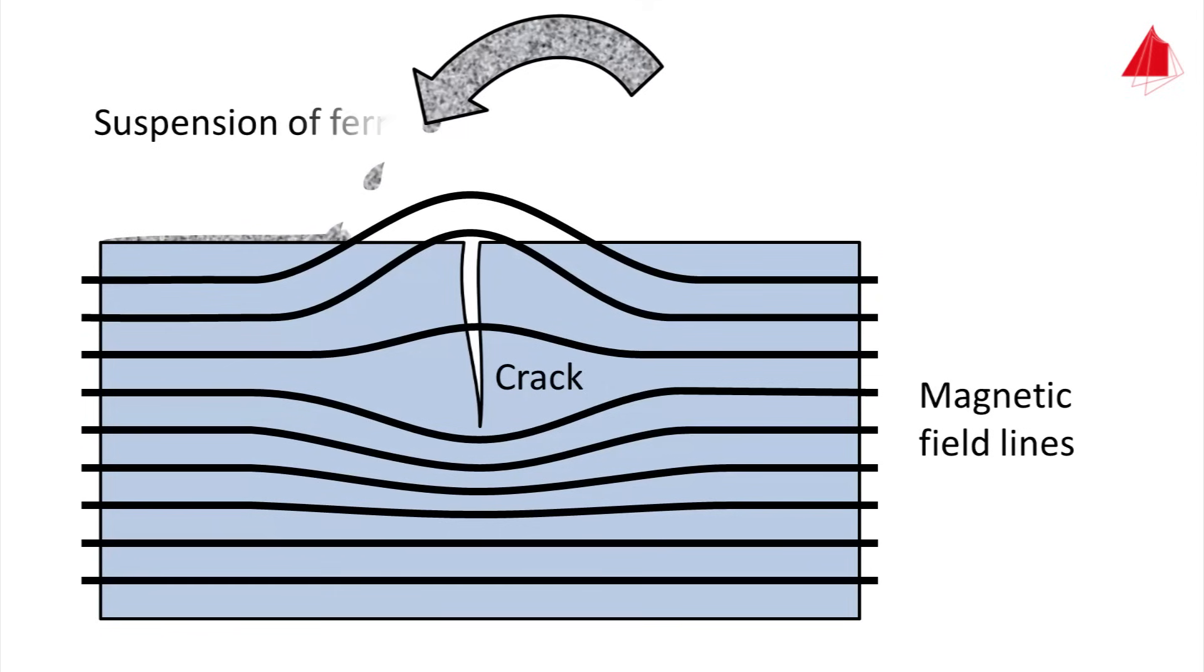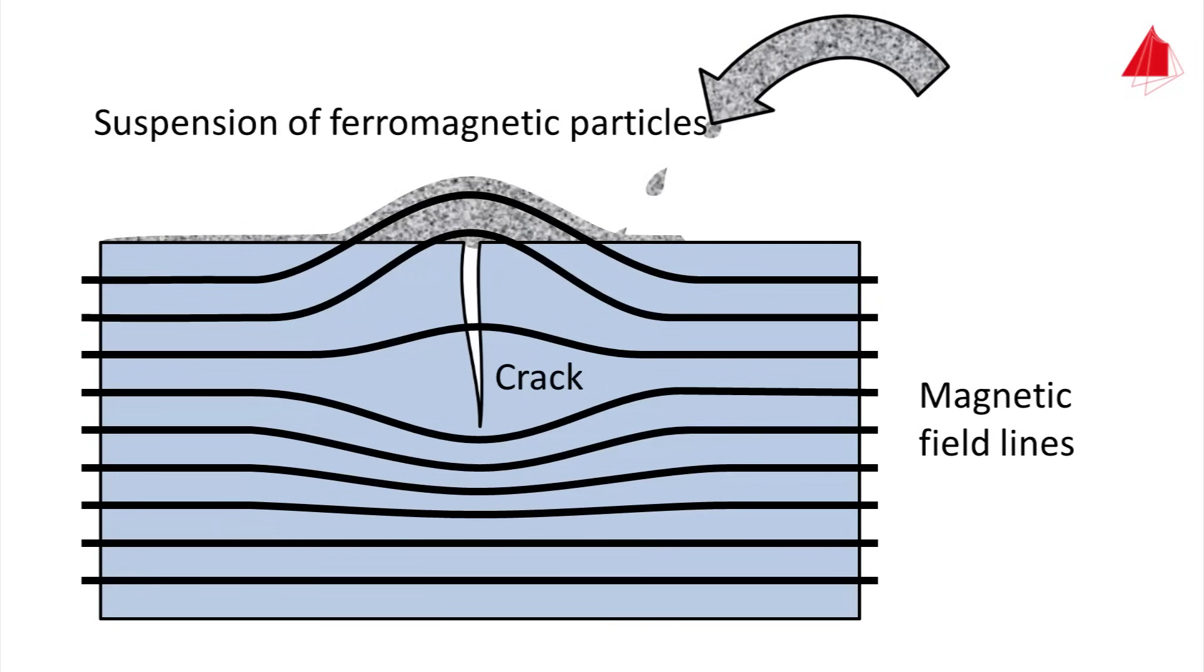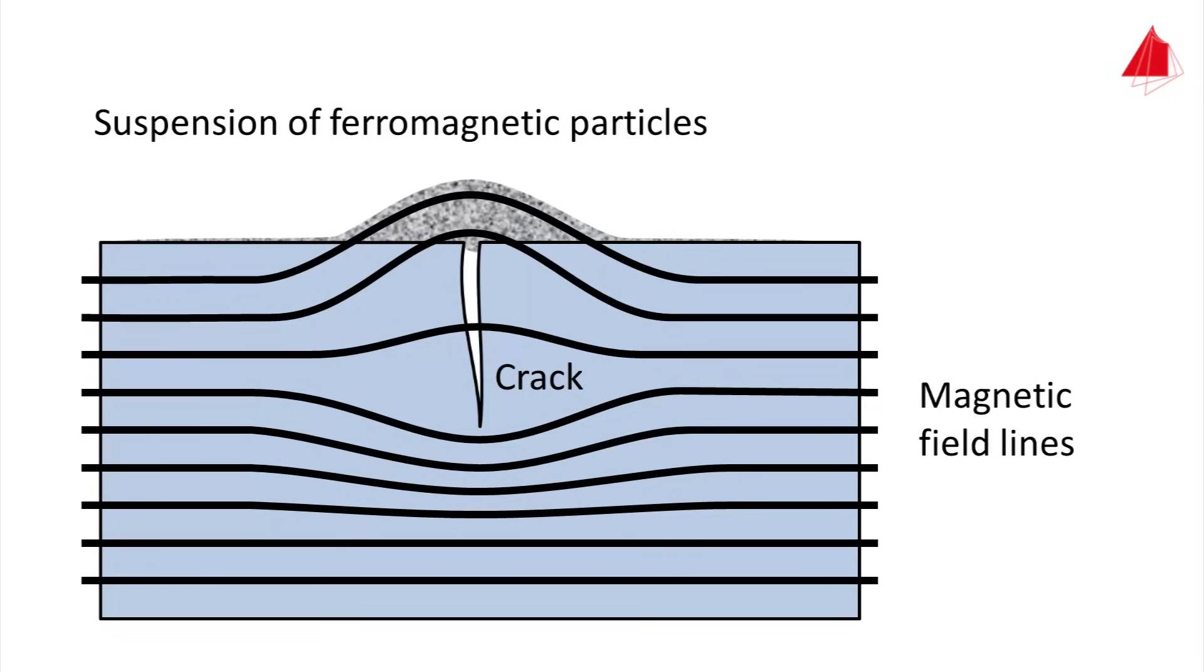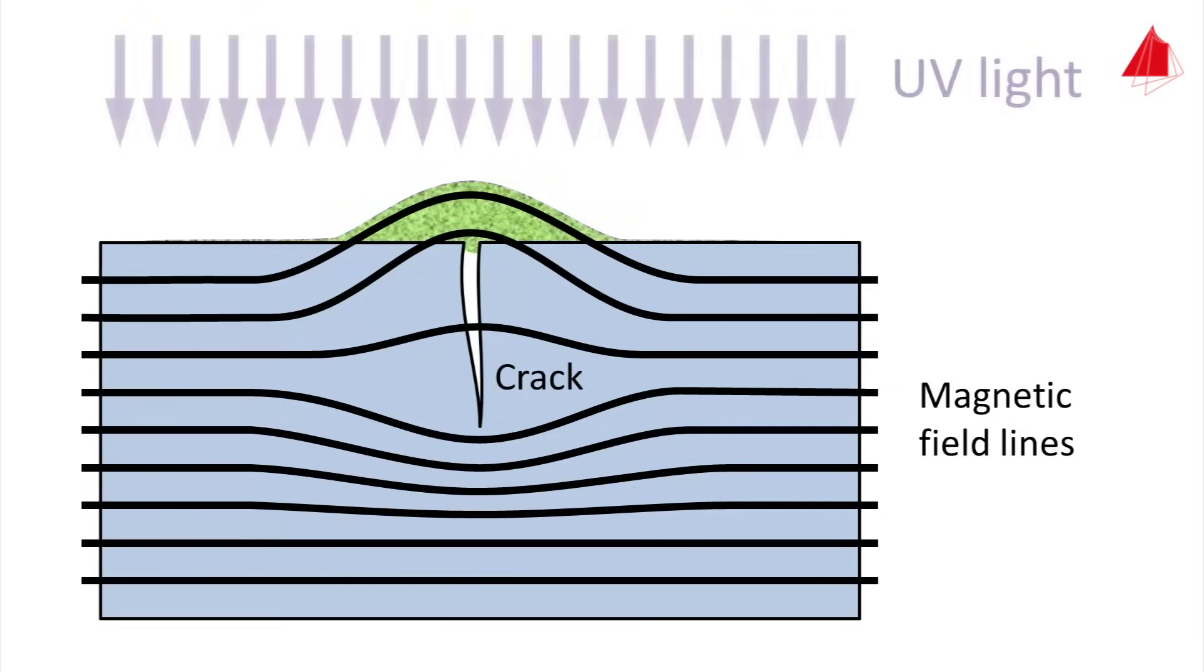the magnetic particles will run off at defect-free areas. In places of leakage fields, the magnetic particles are attracted and clustered together, thus indicating the place of the defect. The method works best using a pigment which covers the magnetic particles and shows fluorescence under ultraviolet light.